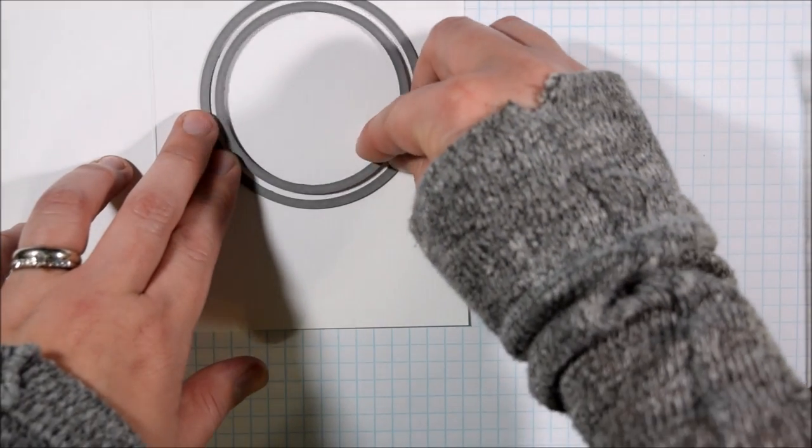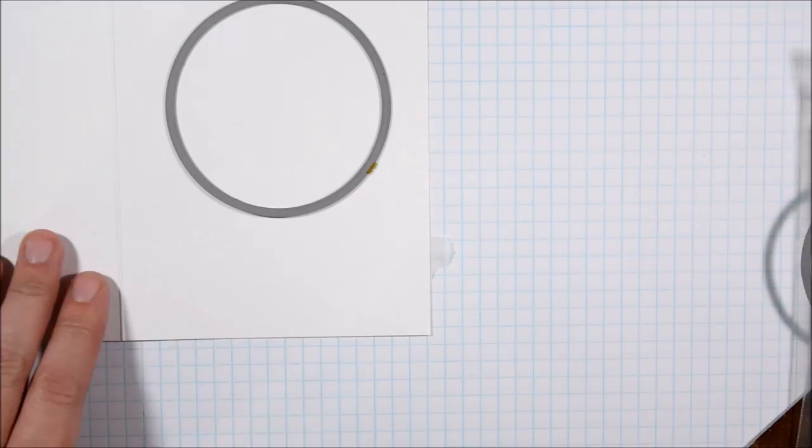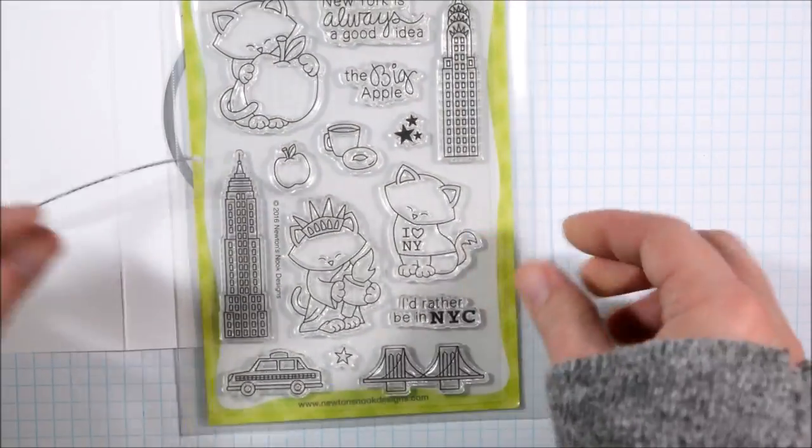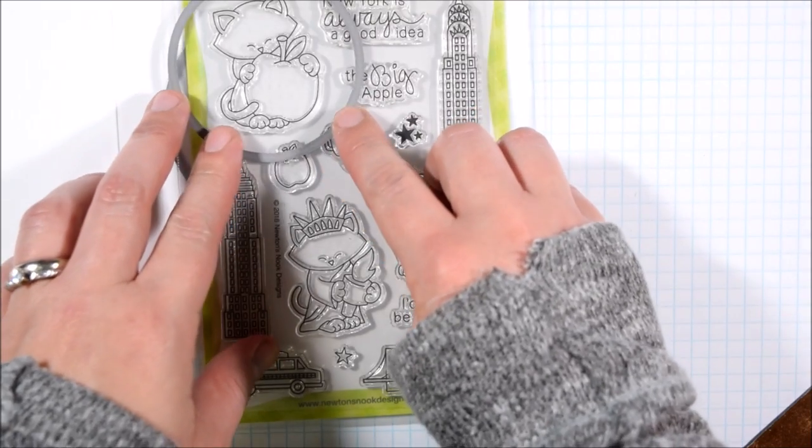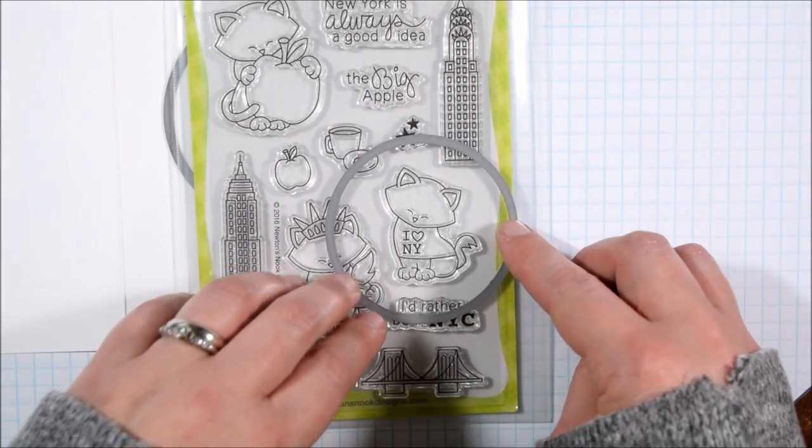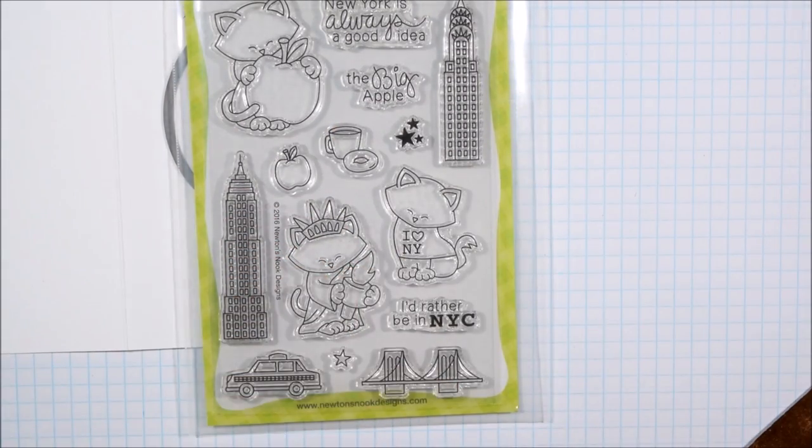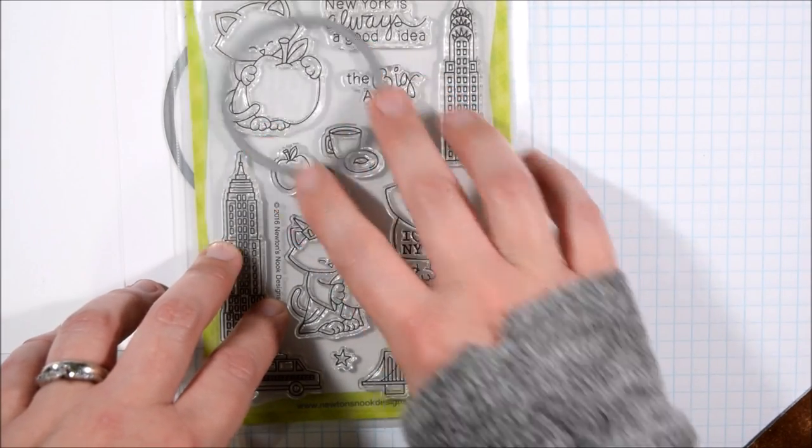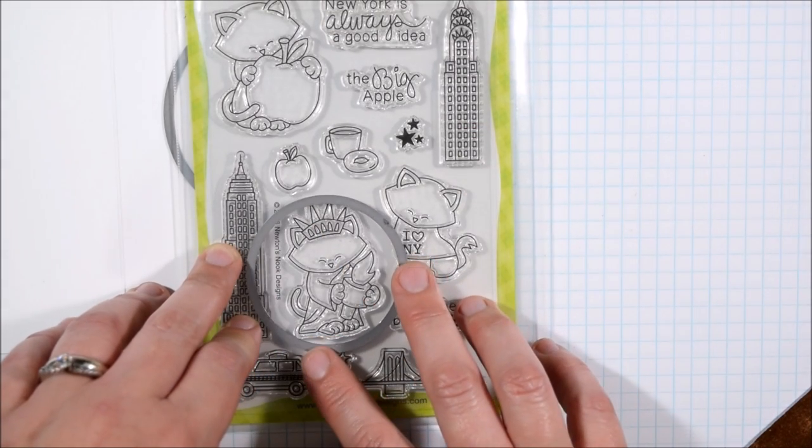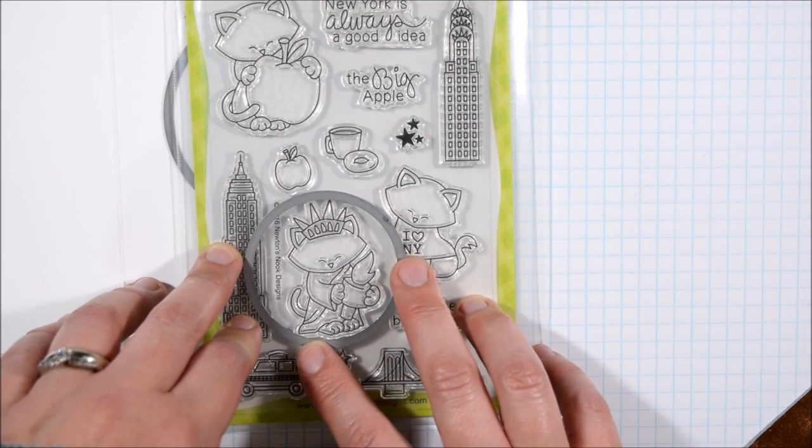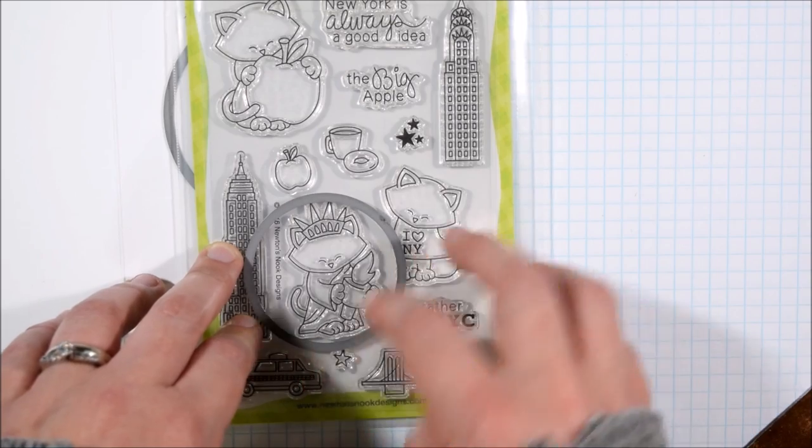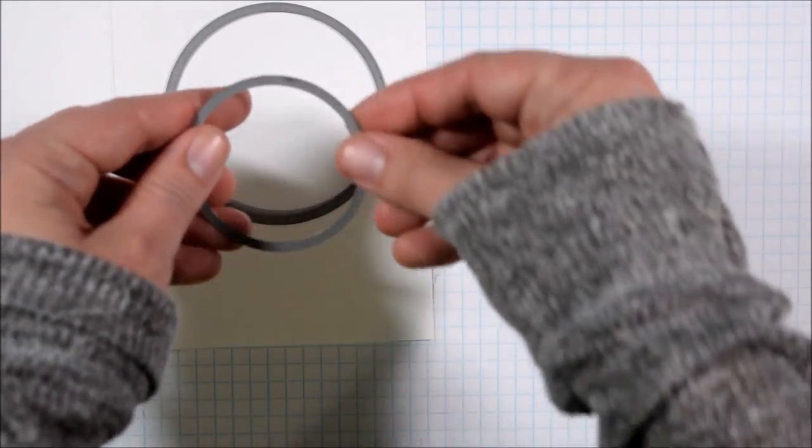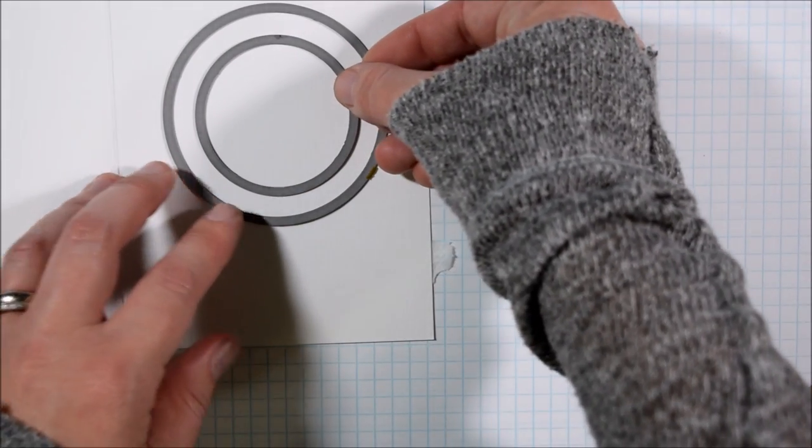Then I want a smaller circle to be the spinner element in the card. This smaller circle is where I'm going to put the Newtons and I'm going to be coloring them with Prismacolor pencils later. I first went one size smaller but then decided to go two sizes smaller because I wanted you to be able to see through into the card a little bit.